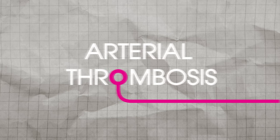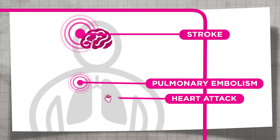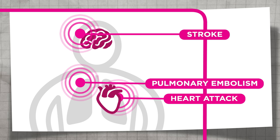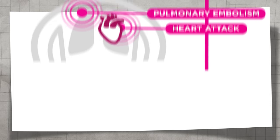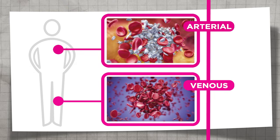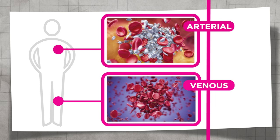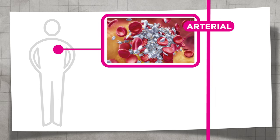Pathological thrombi can be extremely serious, causing complications such as stroke, pulmonary embolism, or heart attack. Two different types of thrombi can form: arterial thrombi and venous thrombi. Here we will focus on arterial thrombosis.